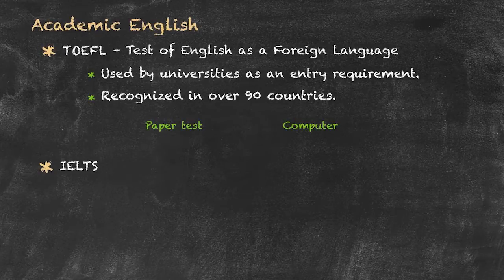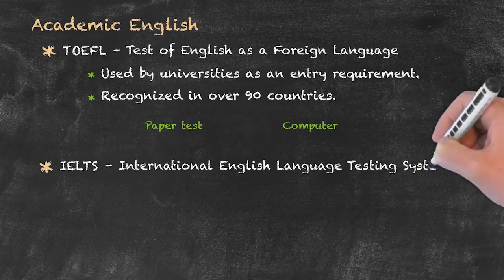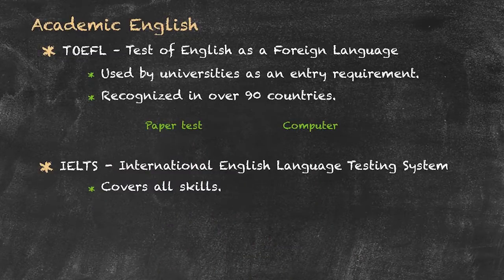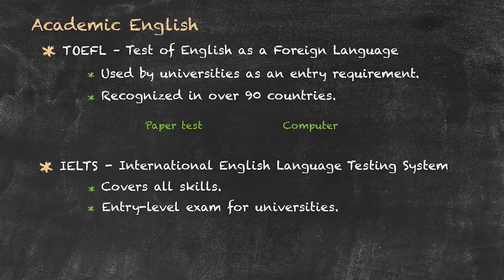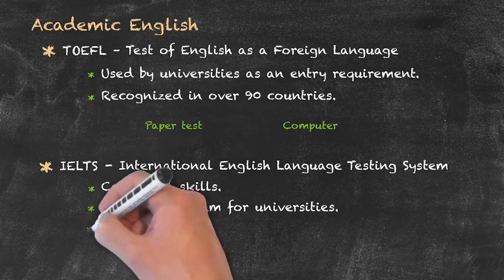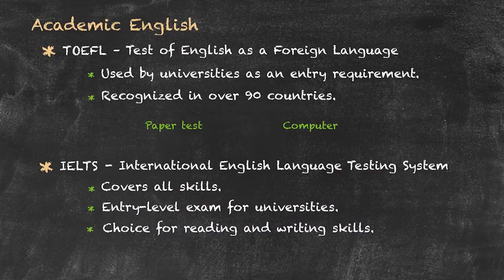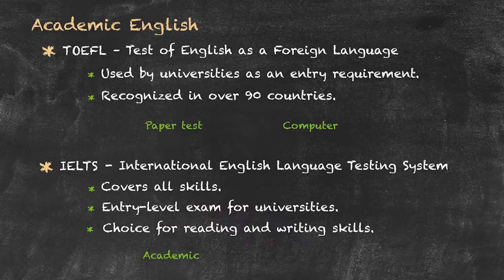The second major academic English exam is the IELTS — the International English Language Testing System. It's a very similar exam to the TOEFL: it covers all skills and is recognised by universities as an entry-level exam. One particular thing about this exam is that for both the reading and writing skills, you get to choose which type of examination you take. So within the reading and writing examinations, you can choose to do either an academic exam or a more general option.